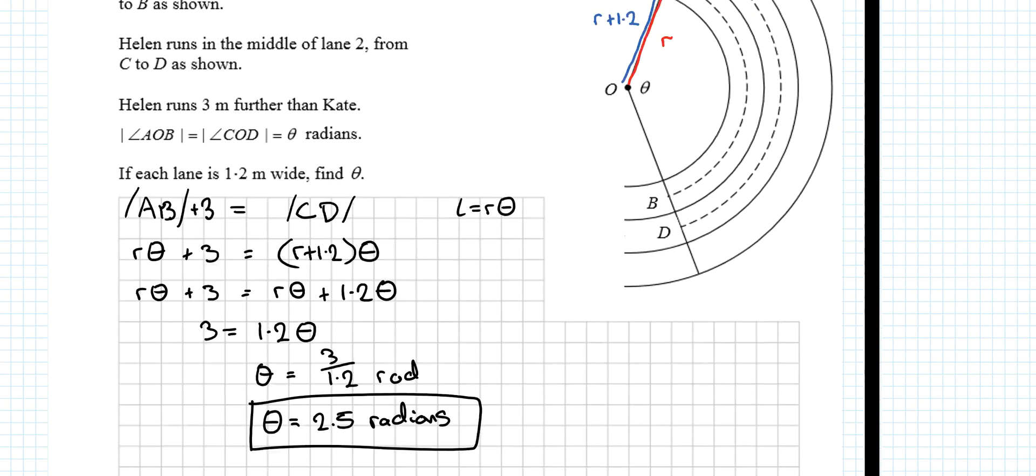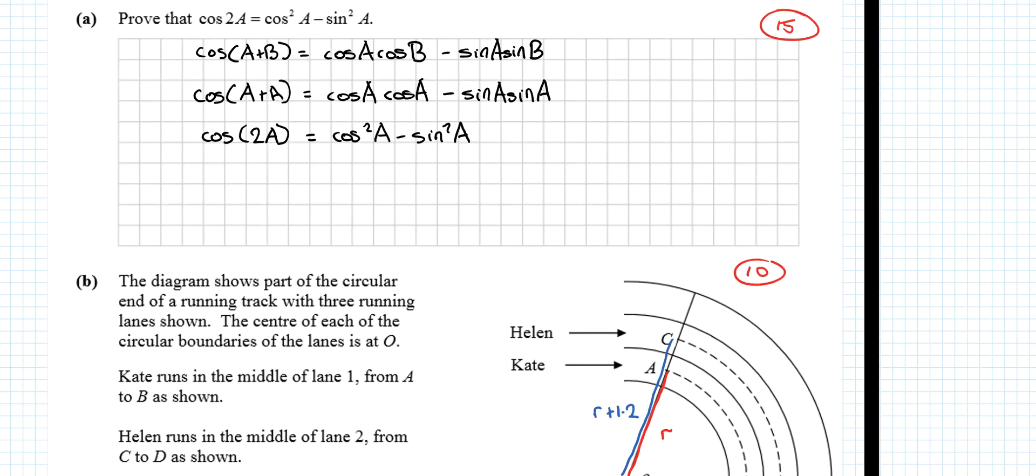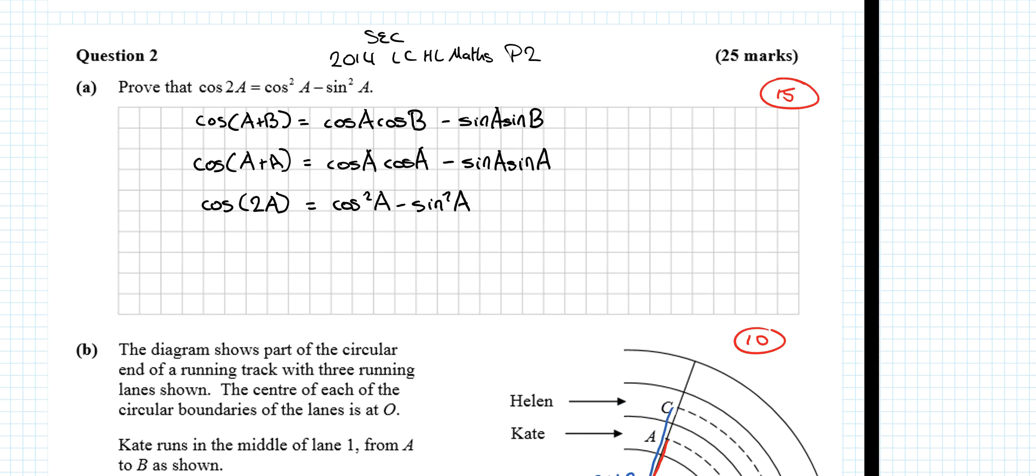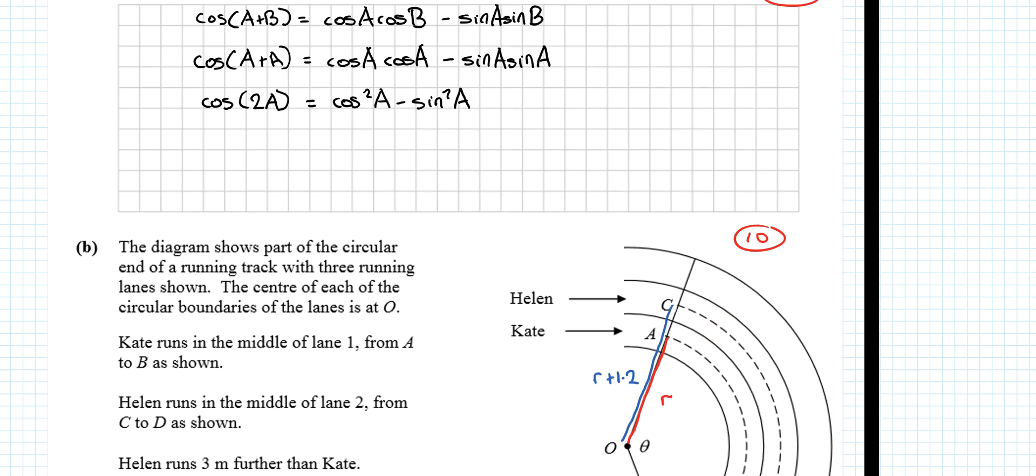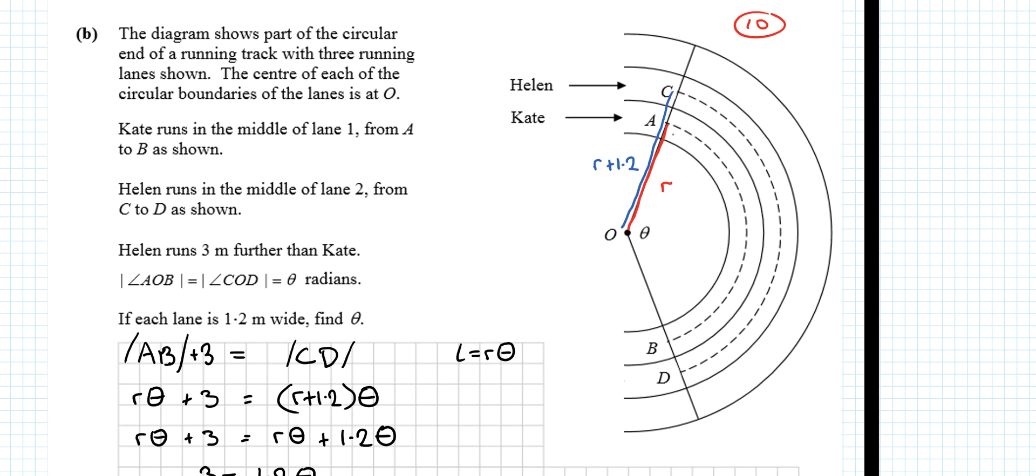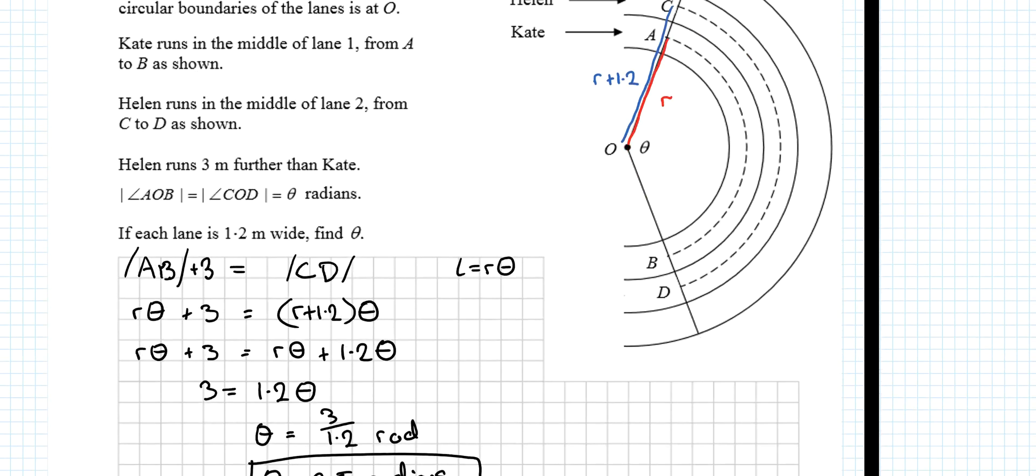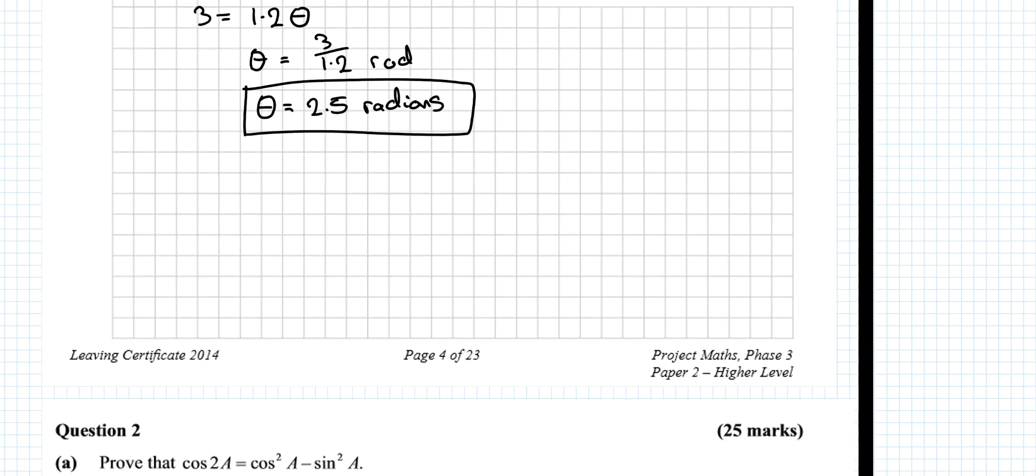It's the whole question done in 5 minutes for 25 marks. It's a really, really nice question if you know what you're doing. A little bit strange here, I suppose, in dealing with what's OR and OR plus 1.2. But really nice in general.